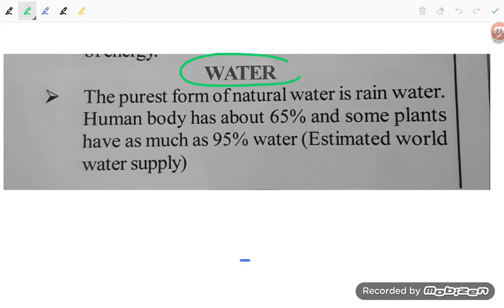Hello students, today we are going to study about water. The purest form of natural water is rainwater. The human body has about 65 percent water and some plants have as much as 95 percent water in estimated world water supply.